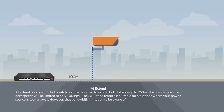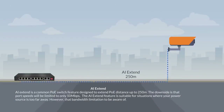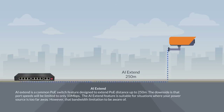AI Extend is a common PoE switch feature designed to extend PoE distance up to 250 meters, which is suitable for situations where your power source is too far away. However, there is a bandwidth limitation to be aware of.